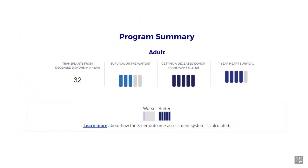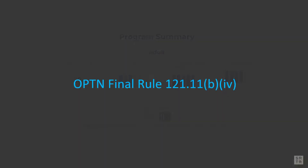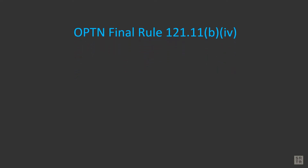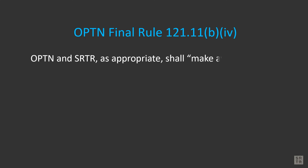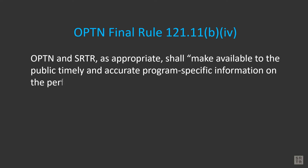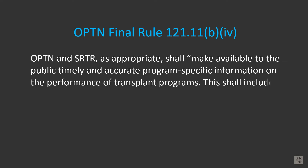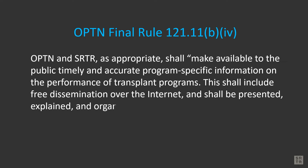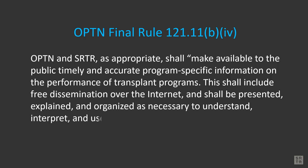SRTR developed the five-tier outcome assessment system to make it easier for the public to compare and understand the outcomes of different transplant programs. This is in alignment with reporting requirements of the Organ Procurement and Transplantation Network Final Rule, which states that OPTN and SRTR, as appropriate, shall make available to the public timely and accurate program-specific information on the performance of transplant programs. This shall include free dissemination over the internet and shall be presented, explained, and organized as necessary to understand, interpret, and use information accurately and efficiently.